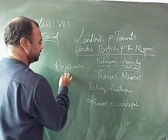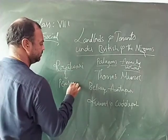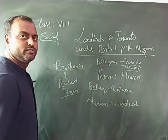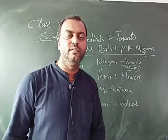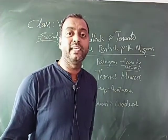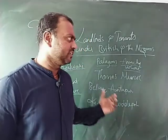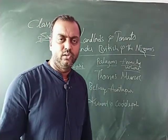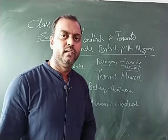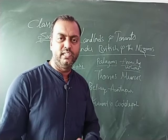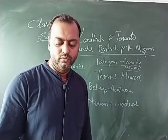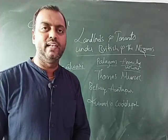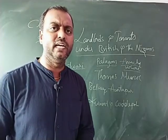The system introduced by Thomas Munro is called the Ryotwari System. 'Ryot' means peasant farmer, and Ryotwari means peasant tenure system. Under this system, the collection of revenue would be made directly from the actual cultivators or owners of the land — whether they worked the land themselves or rented it — they had to pay the tax directly to the government.